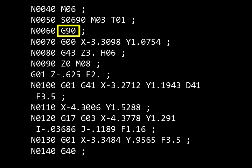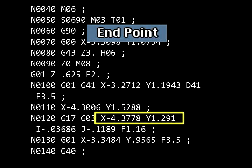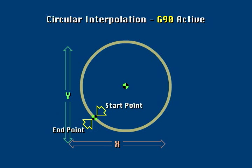When absolute programming is used, you can determine if an arc or a full circle is being machined by looking at the coordinates. Compare the start point data to the end point data. If the end point and the start point coordinates represent the same location, the cut is a full circle.